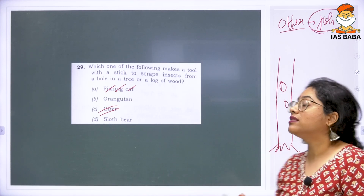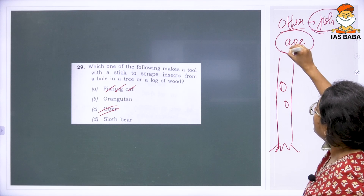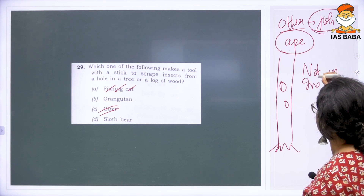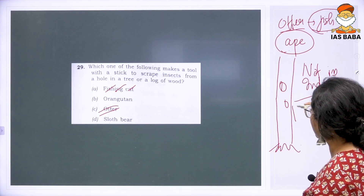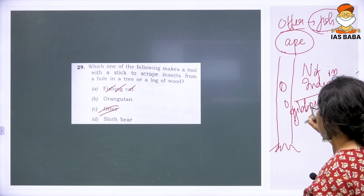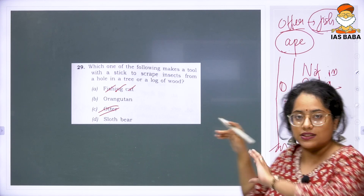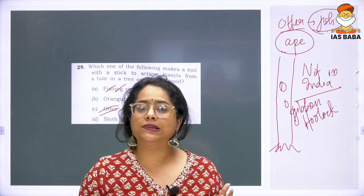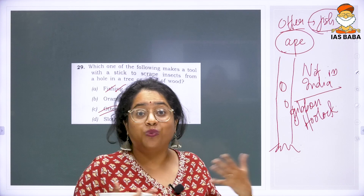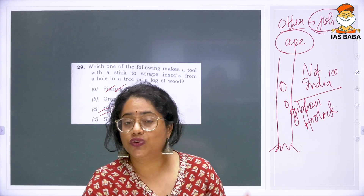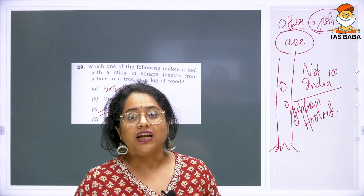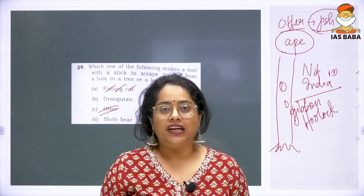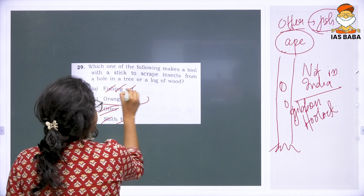Orangutan is one of the ape species in the world. It does not occur in India — India has only one major ape species, which is the hoolock gibbon. The sloth bear also likes to eat ants and insects, but it does not put in this much activity — it primarily tries to get food that is in its immediate vicinity and does not apply such expertise or evolved traits when finding food. So the answer to this question is orangutan.